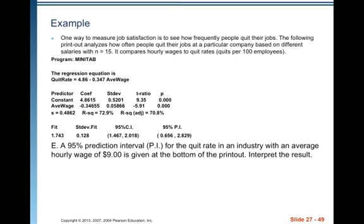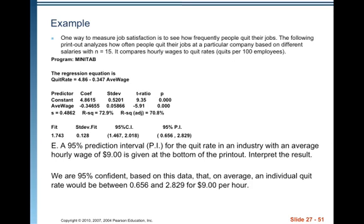A 95% prediction interval for the quit rate in an industry with an average hourly wage of $9 is given at the bottom of the printout. The actual prediction is 1.743. For a particular industry with an average hourly wage of $9, we are 95% confident that an individual quit rate would be between 0.656 and 2.829 per 100 employees.